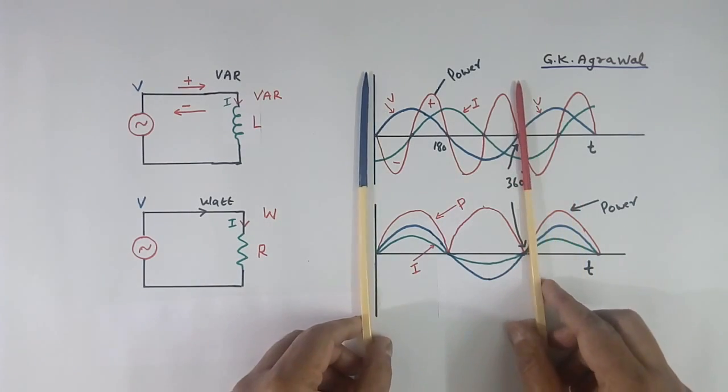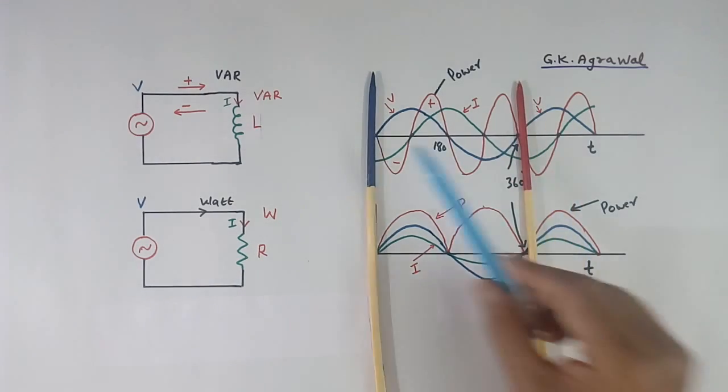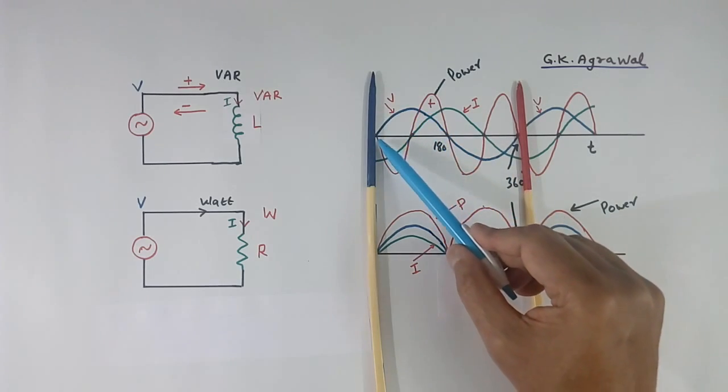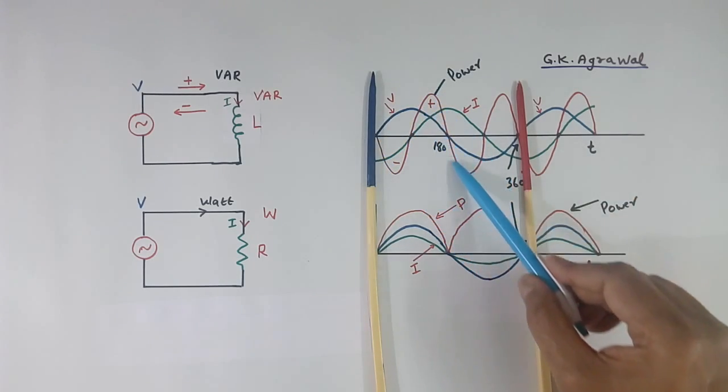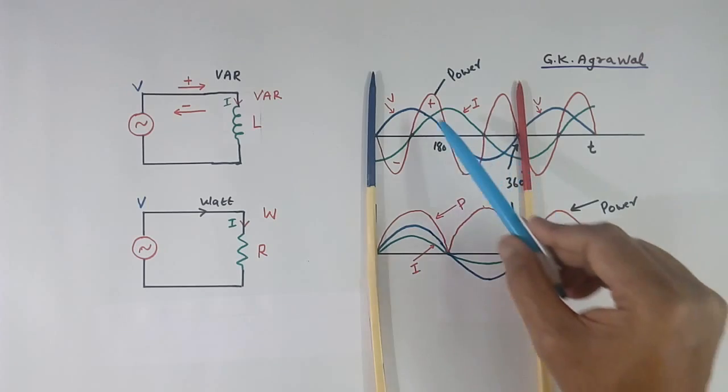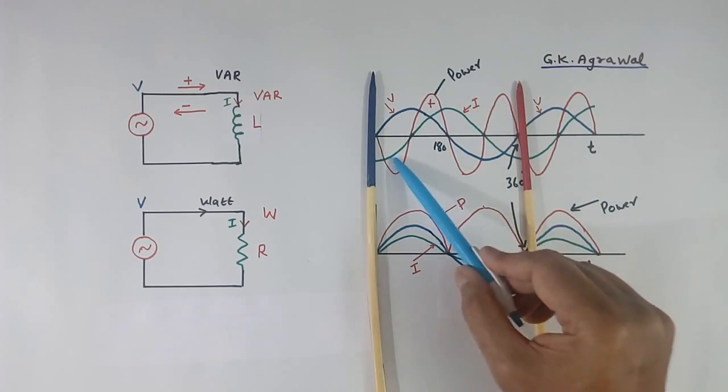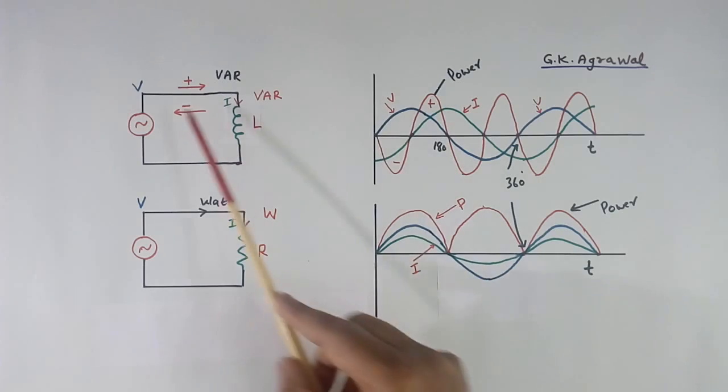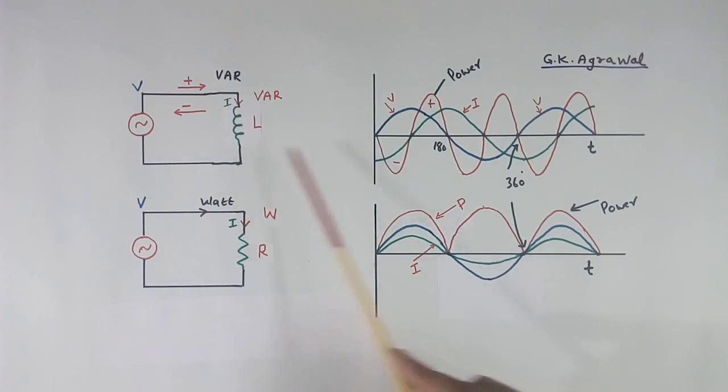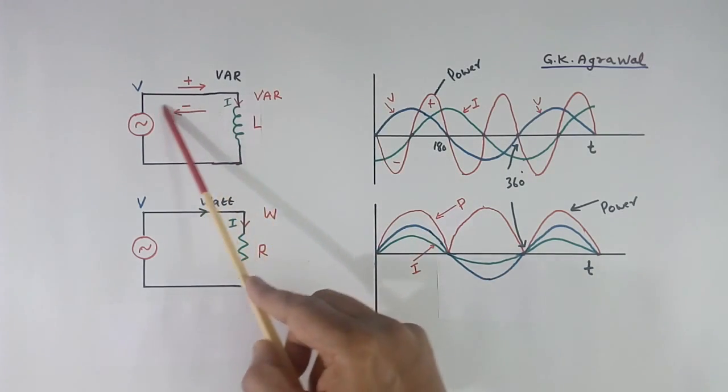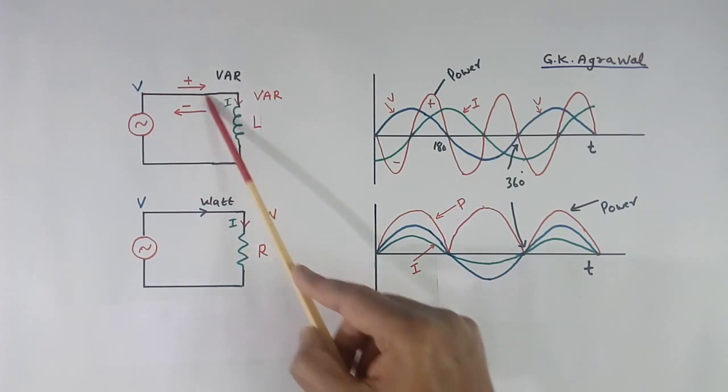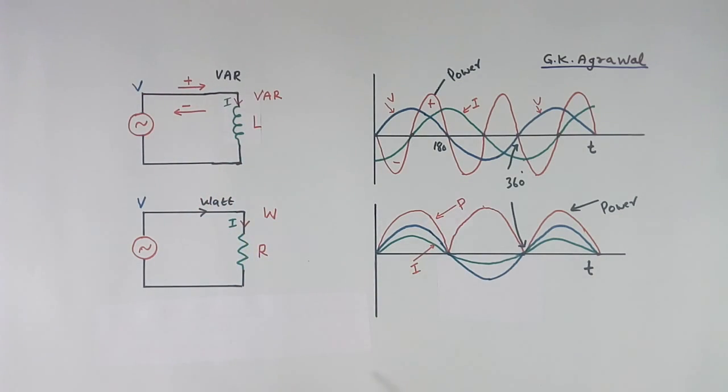Now you see, this is one cycle of voltage. In this cycle, power has two cycles. Two times it goes positive, two times it goes negative. Positive means power is flowing like this. Negative means power is flowing like this. So power will be oscillating. It will flow like this, then it will flow like this. This is called the reactive power.